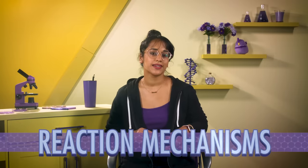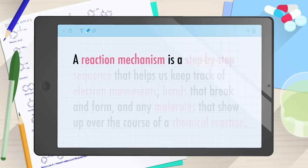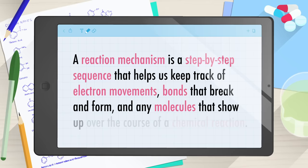Every chemical reaction has a beginning and an end. We start with one or more reactants, and our destination is one or more products. Reaction mechanisms are detailed maps that show us the routes we can take and many notable pit stops along the way. In non-metaphorical words, a reaction mechanism is a step-by-step sequence that helps us keep track of electron movements, bonds that break and form, and any molecules that show up over the course of a chemical reaction.